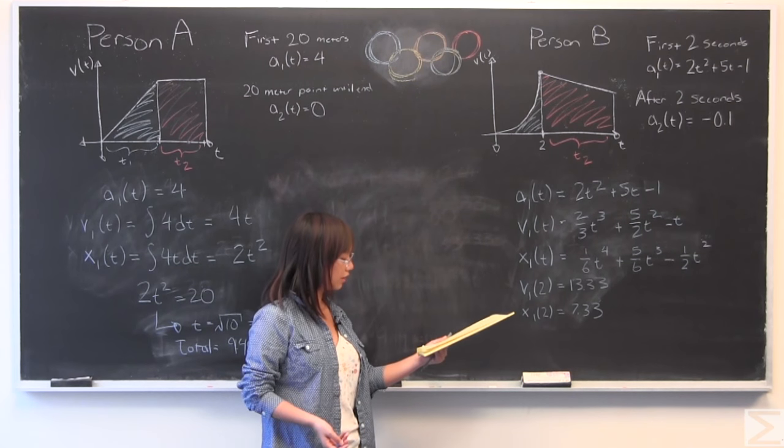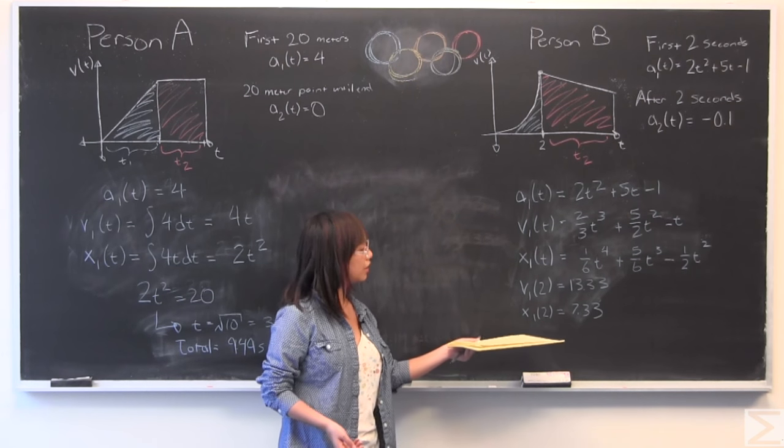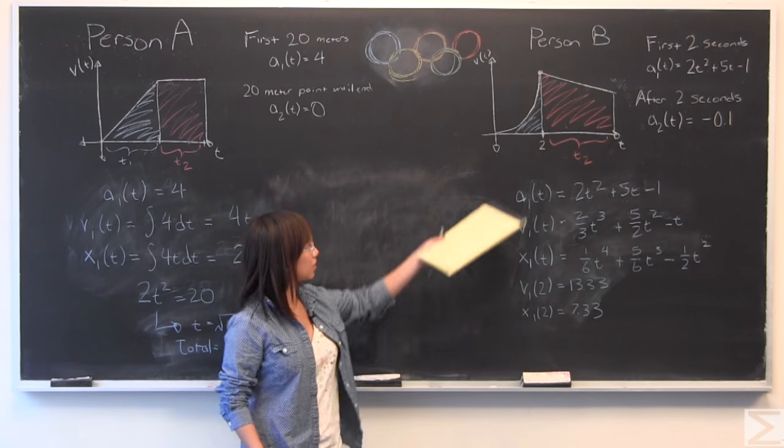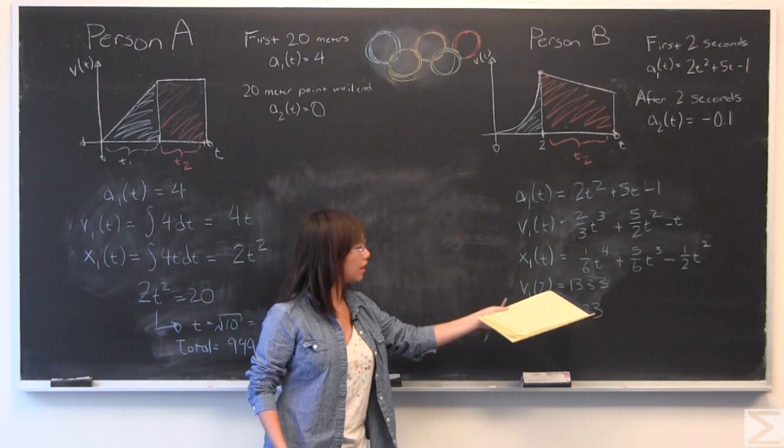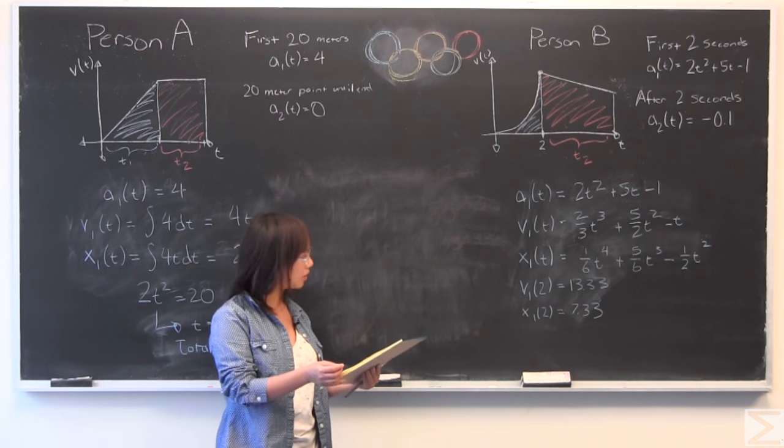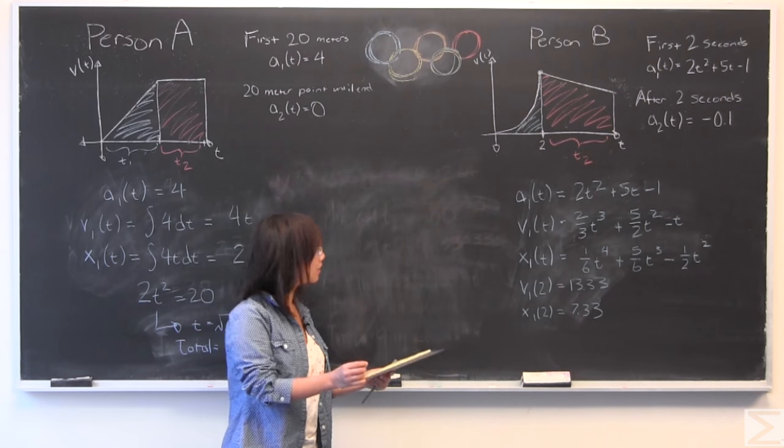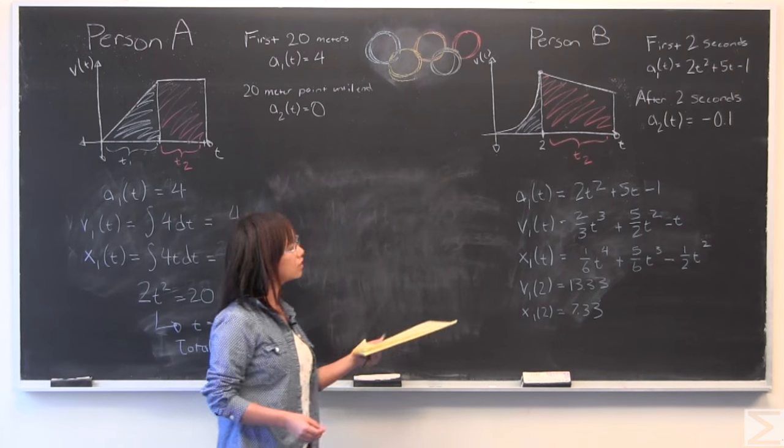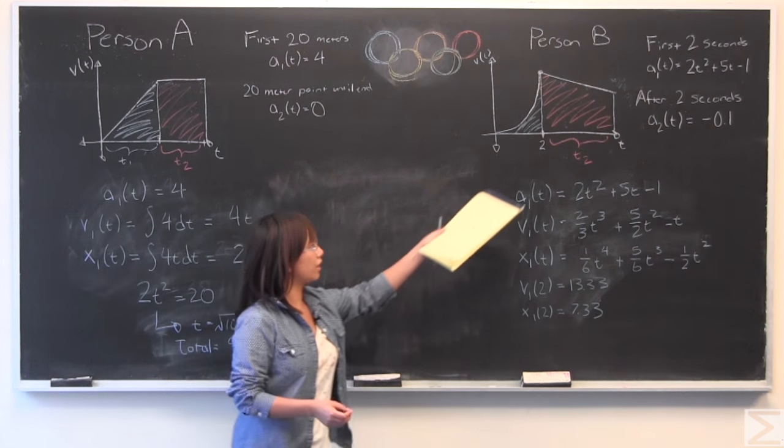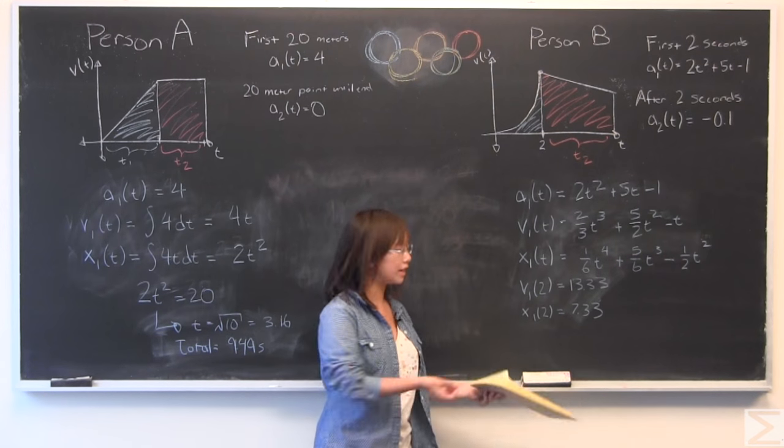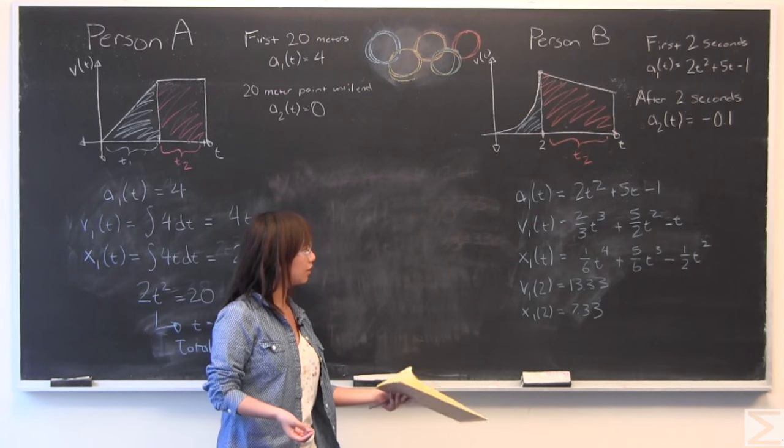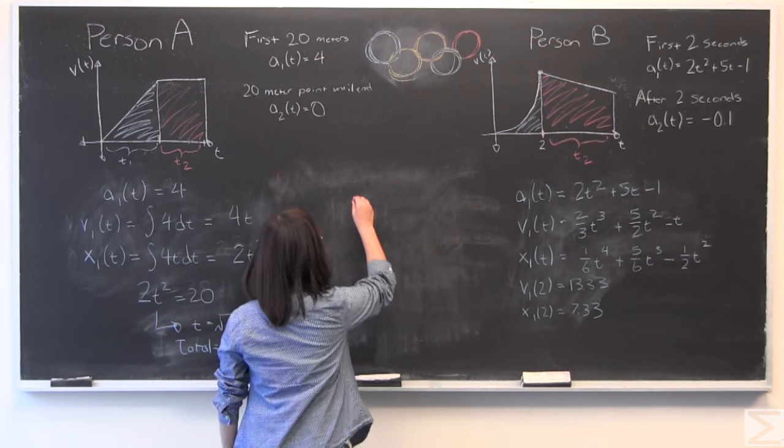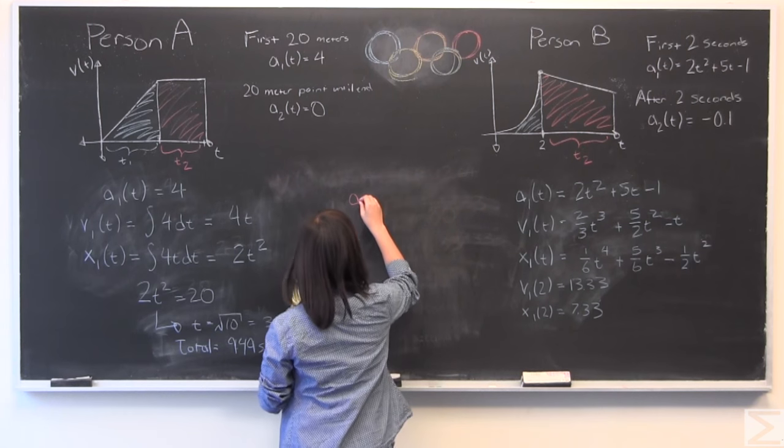So just plugging that in, we get a velocity of 13.33 meters per second and a distance traveled of 7.33 meters, which means that there is leftover 92.67 meters left to travel. And this person at that point, at two seconds, is traveling at 13.33 meters per second, which is very fast. The second part is much easier because the acceleration function is so simple. We can take this as a different part and say the area under this curve just has to equal the rest, which is 92.67 meters.